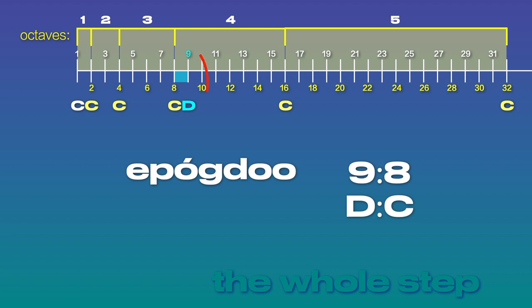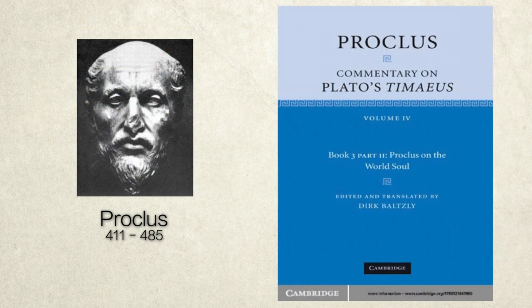The whole step ratio of 9 to 8 reveals a level of knowledge of the 16 note scale held by the Greeks that was not shared, taught, or utilized in their temperament of music. That knowledge was hinted at, however, by Proclus, a Greek philosopher who lived in the 5th century AD. He studied Plato and wrote several commentaries on his work. In his Commentary on Plato's Timaeus, Volume 4, Book 3, Part 2, we read this.